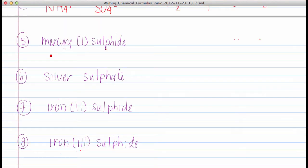Continuing on. Mercury 1 is H G plus 1, and S 2 minus. So H G plus 1, S 2 minus. Criss-cross would give me H G 2 S.